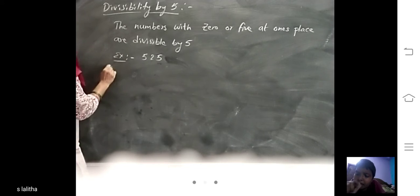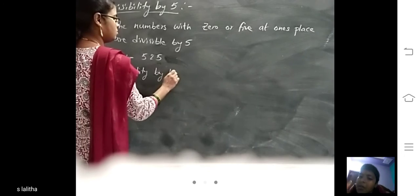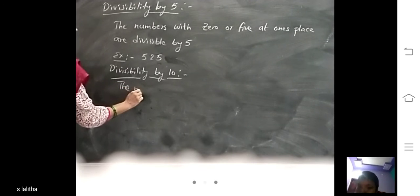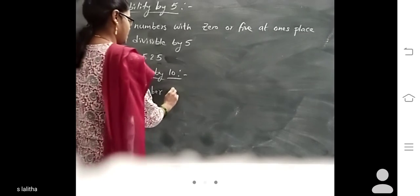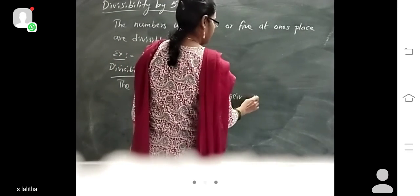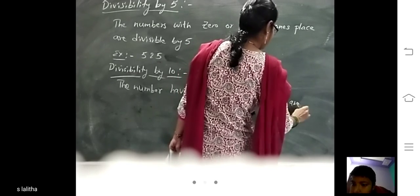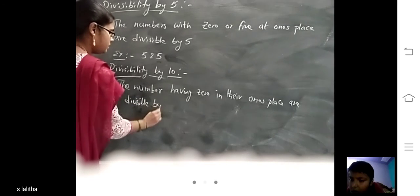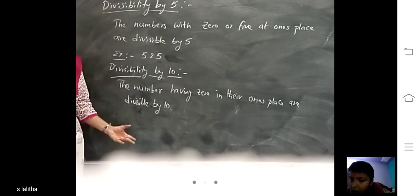Next one is divisibility by 10. In this, if the ones place is zero, then it is divisible by 10. Okay?